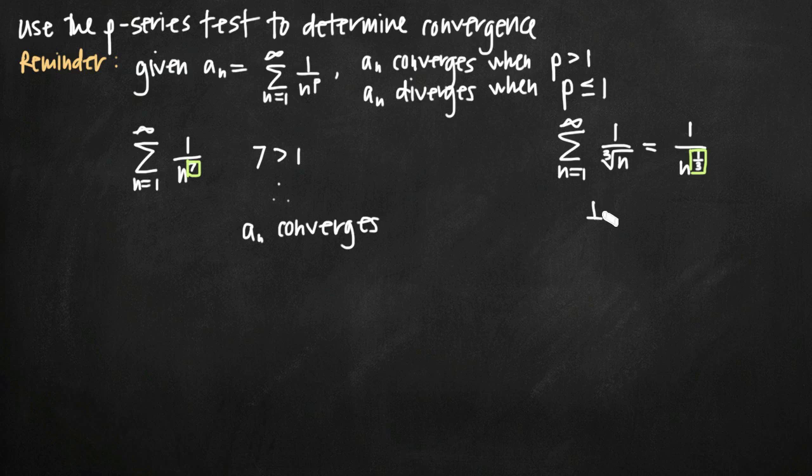Well, 1/3 is less than 1, so therefore because 1/3 is less than 1, we can say that this series, we'll call this series b sub n, diverges because 1/3 is less than 1 and the p-series test tells us that when we have a value for p less than or equal to 1, the series diverges.